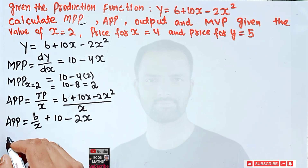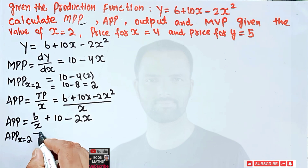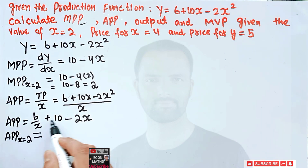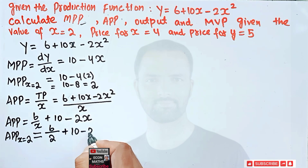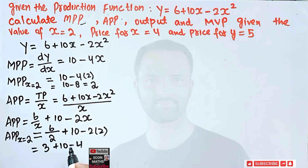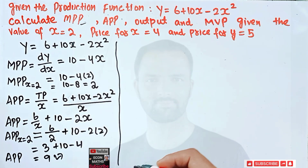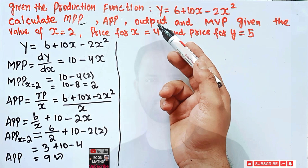Now what is the average physical product when x = 2? We plug x = 2 into our APP function: APP = 6/2 + 10 - 2(2) = 3 + 10 - 4 = 9. So our average physical product when x = 2 is equal to 9.